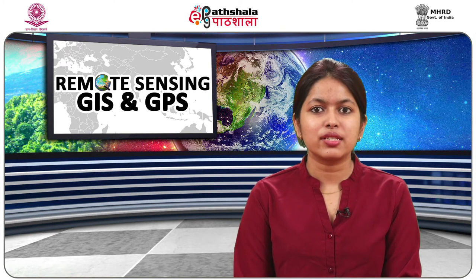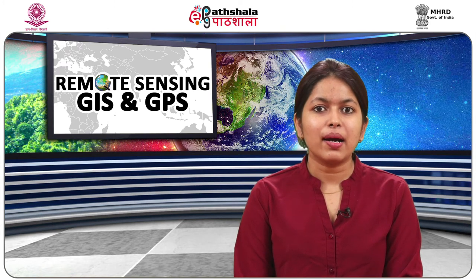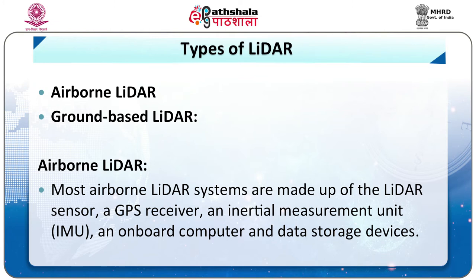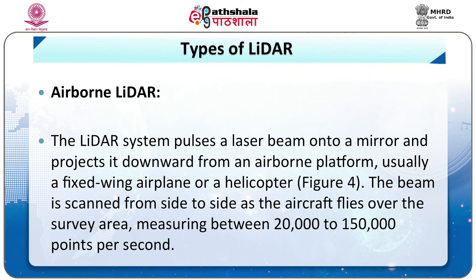The example displays mass points associated with the ground, several power lines, a pole and a tree canopy as shown in figure 3a. Now we will discuss the types of LIDAR. For airborne LIDAR, most systems are made up of the LIDAR sensor, a GPS receiver and IMU unit, an onboard computer and a data storage device. The LIDAR system pulses a laser beam onto a mirror and projects it downward from its airborne platform, usually a fixed-wing aeroplane or a helicopter, as shown in figure 4.